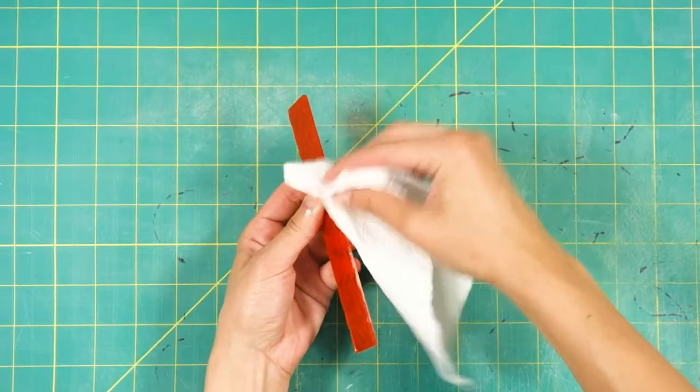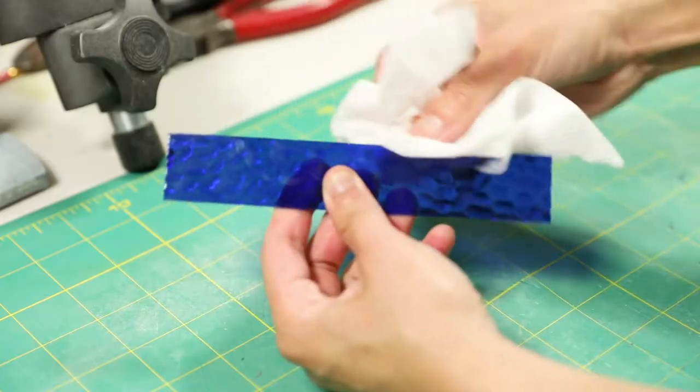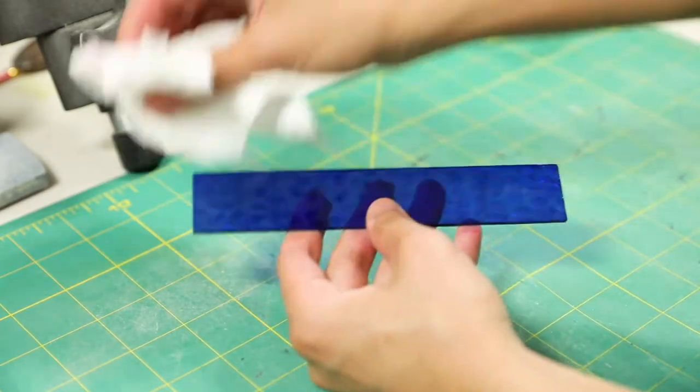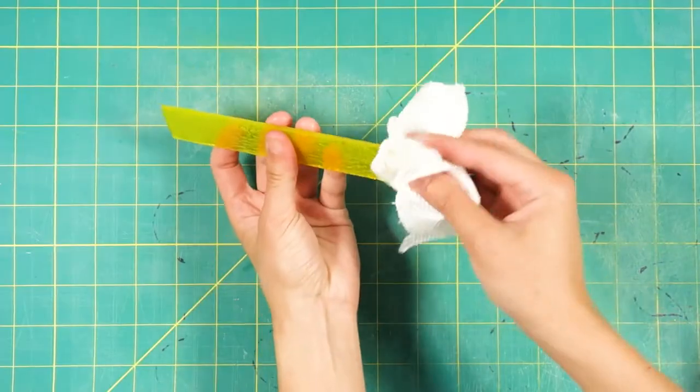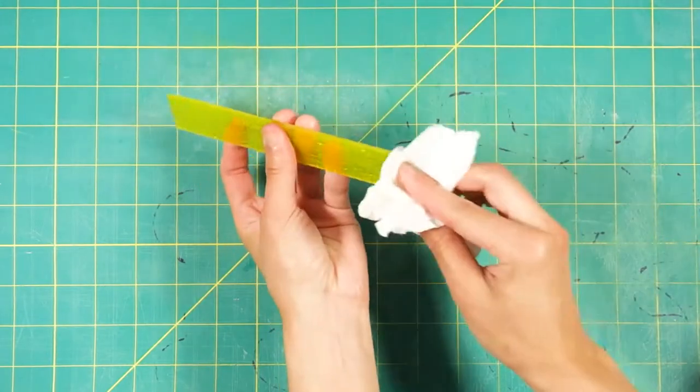Usually before I prep the glass pieces for soldering, I'll clean them with a semi-damp paper towel. This removes the line you made with the marker, if it's still on the glass, and all the glass dust from sanding.